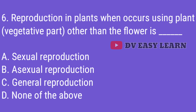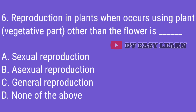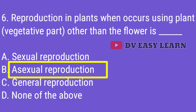Q6. Reproduction in plants when it occurs using plant or vegetative parts other than the flower is? Correct answer: Asexual reproduction.